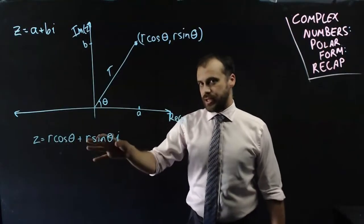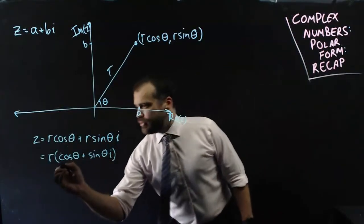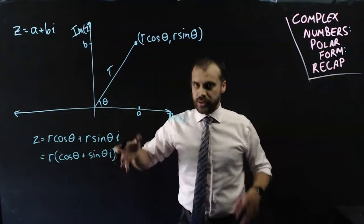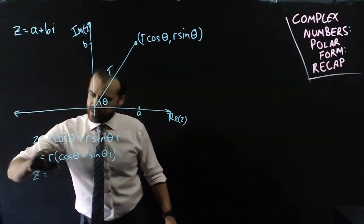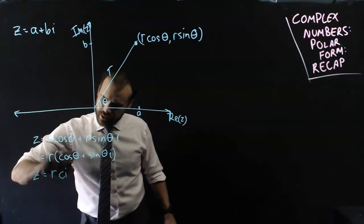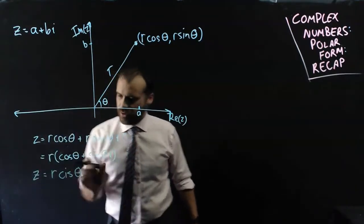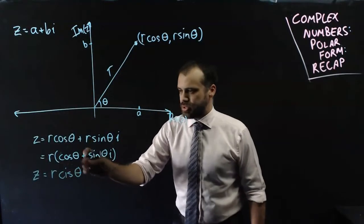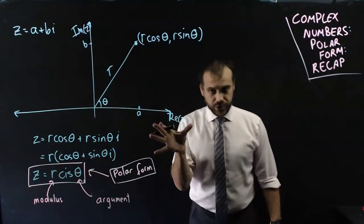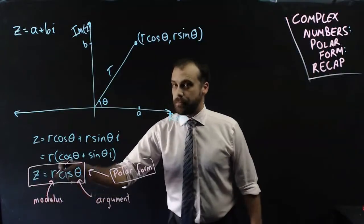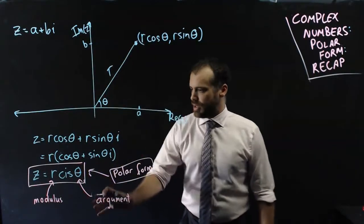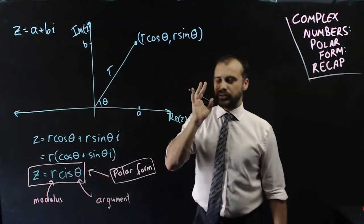Now of course we can factorize that. And this bit is so common that it's useful to abbreviate it. And our final form is Z is equal to r cis theta, where cis means cos theta plus sine theta i. So just to put some names on things, this is the polar form, this is the modulus, the length here, and this angle is called the argument.